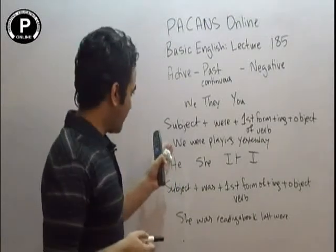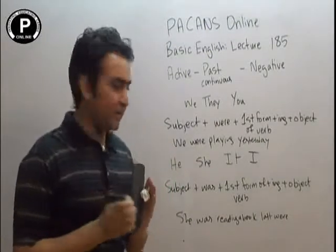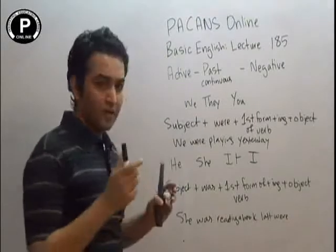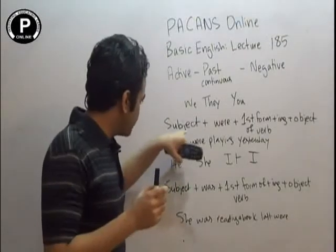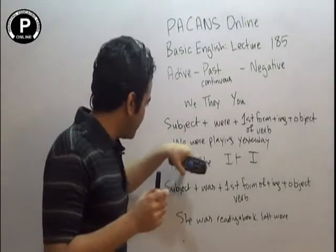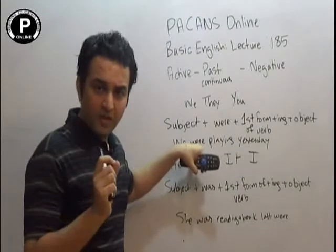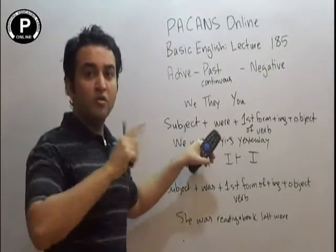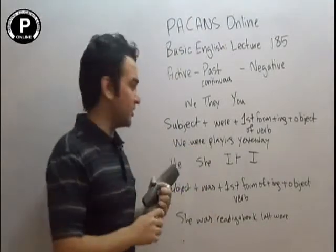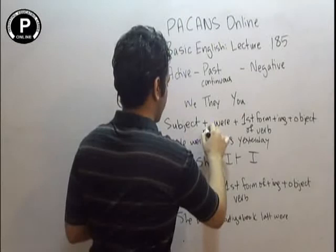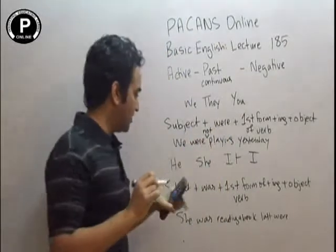Now you have to see how to make negative sentences. Where are the helping verbs? Subject verb — we were. Did you get it? Not. What is the helping verb? We were not playing yesterday.